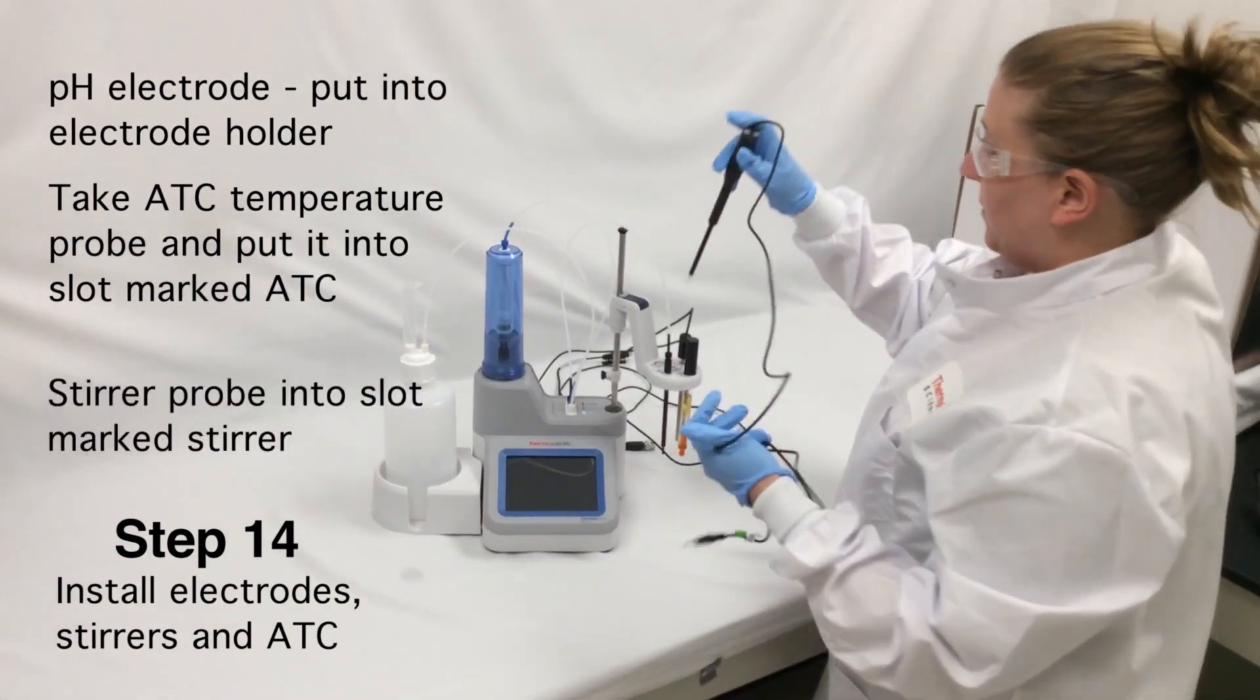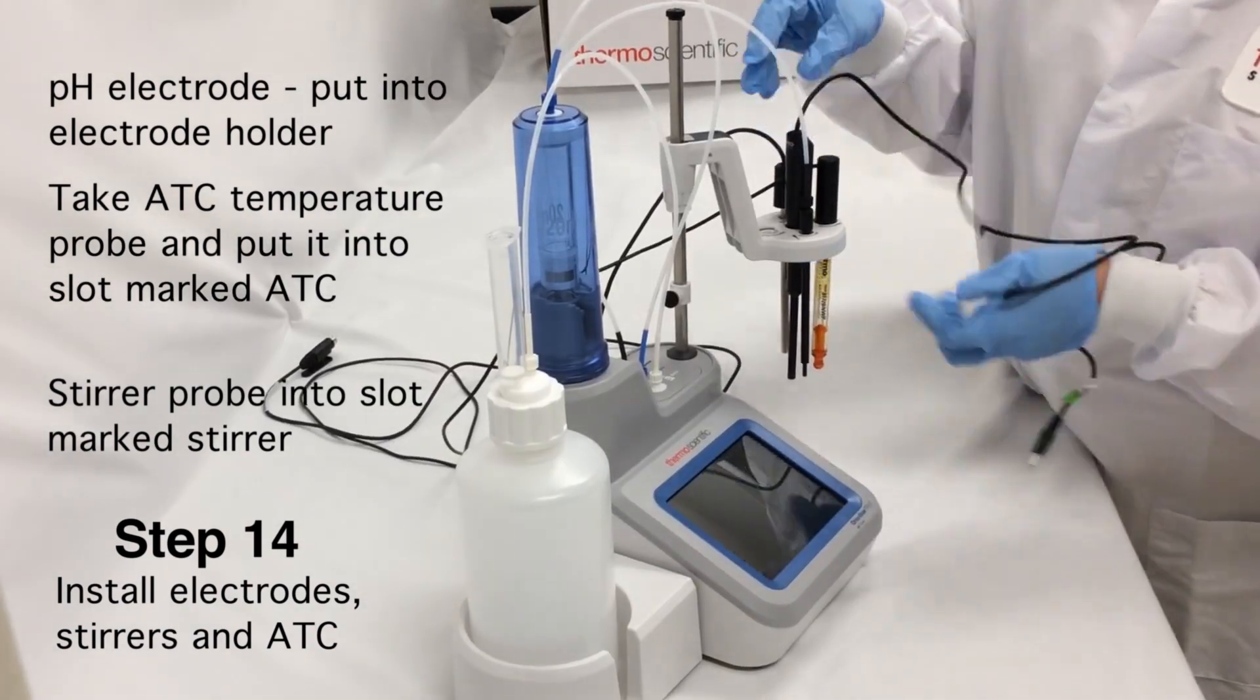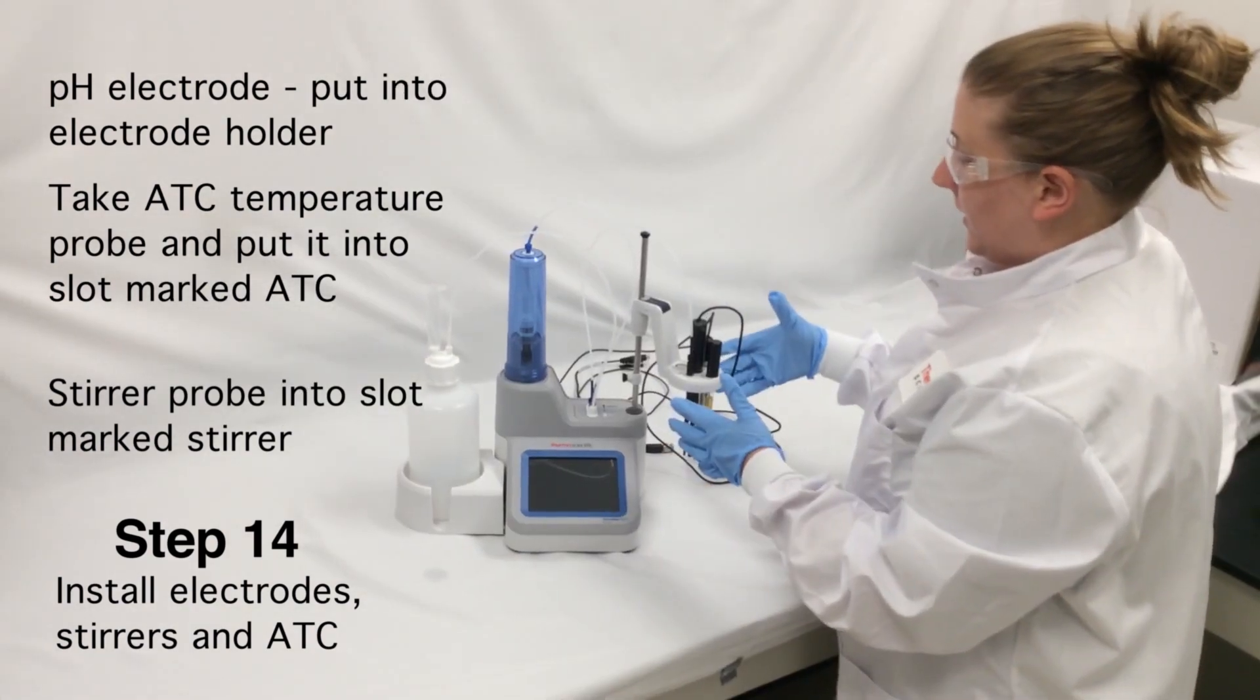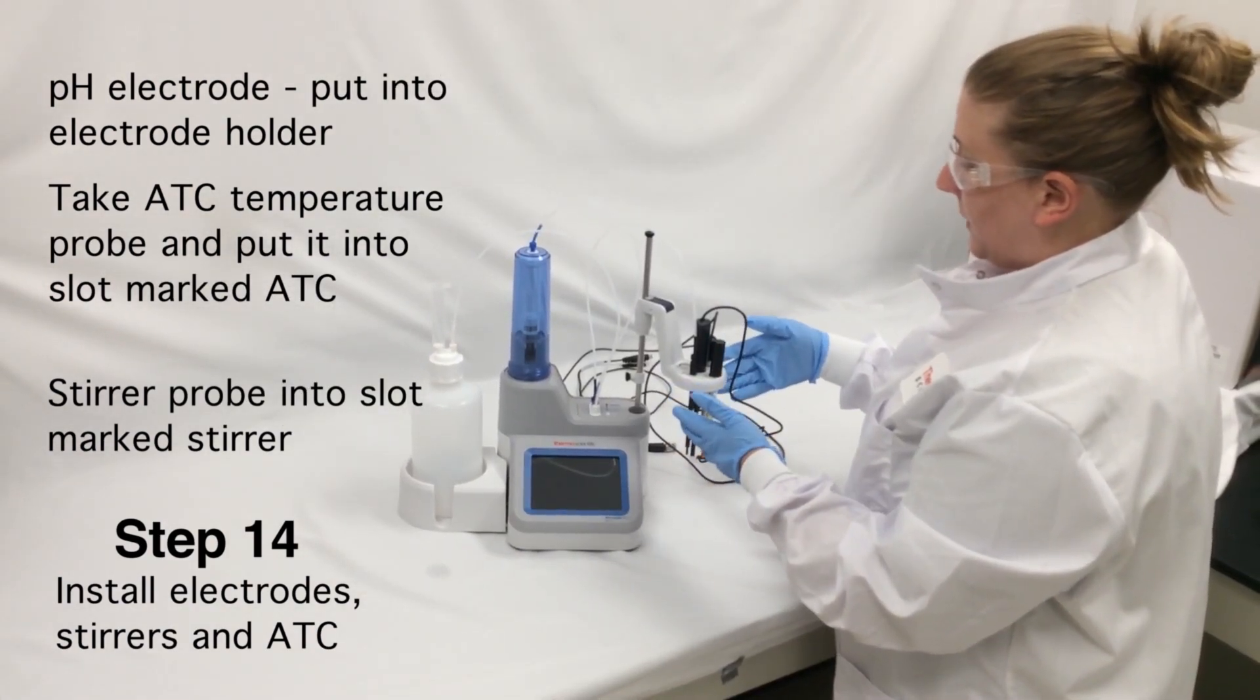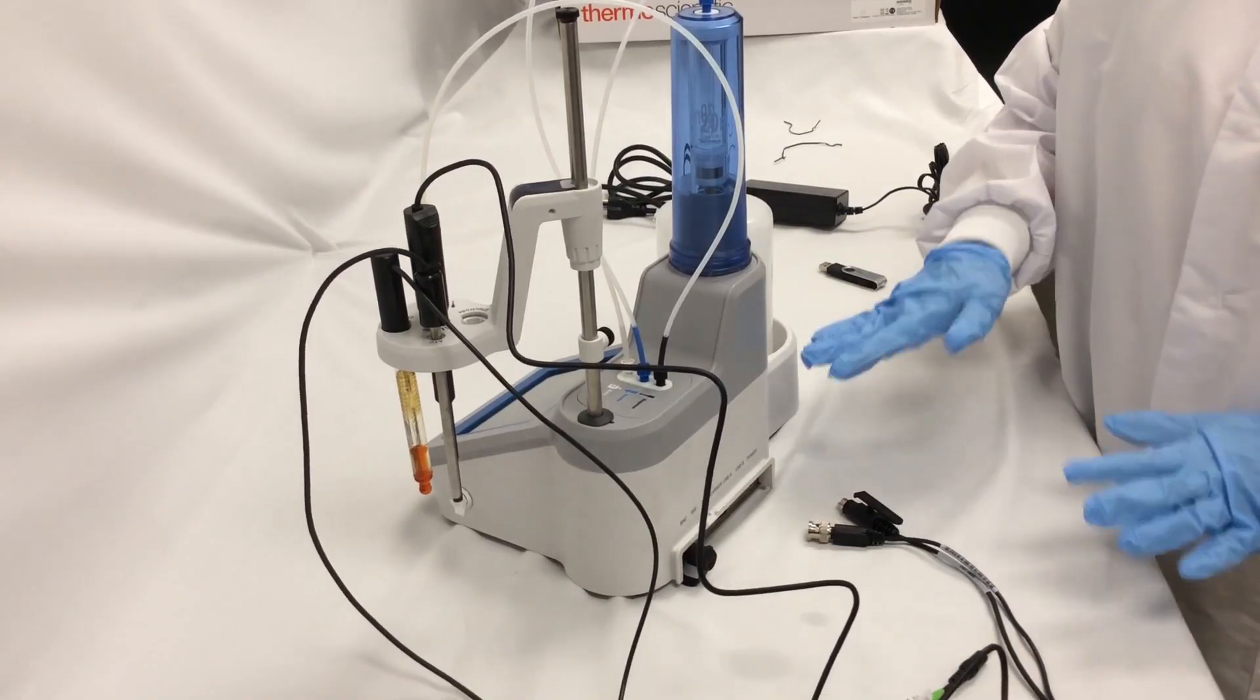Take the stir probe and put it in the slot marked stir. Now all the sensing electrodes, stir, and dispenser are ready to go into the sample holder.